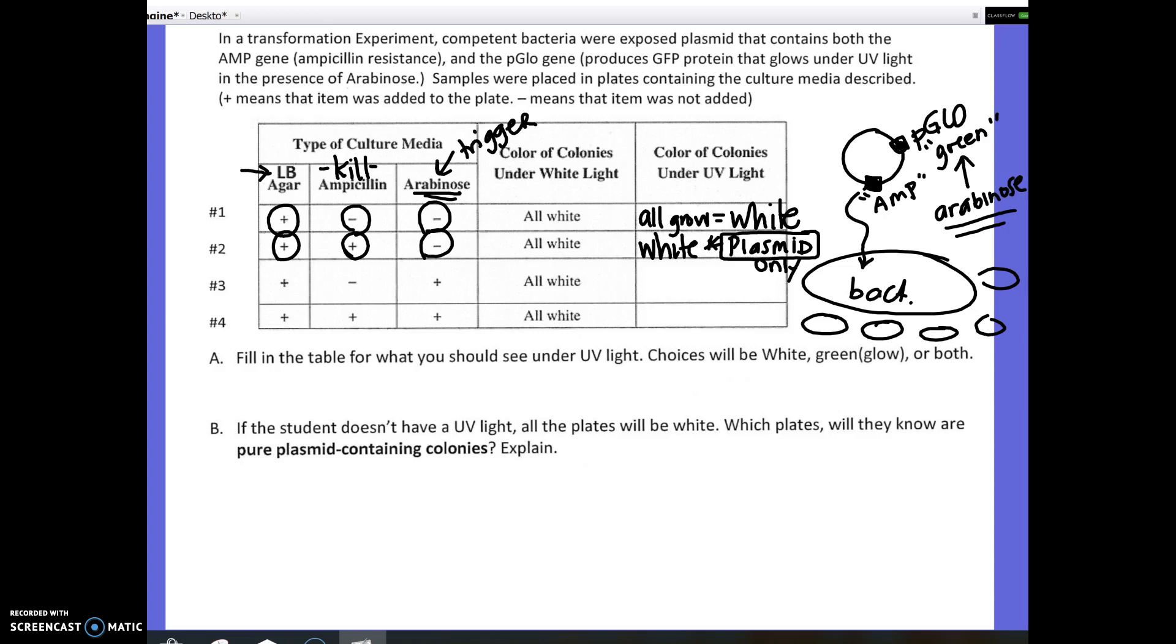Plate number three. Food. No ampicillin, and we added arabinose. Now, remember, arabinose is the trigger to make them glow. But, here's the thing. Since there's no ampicillin on the plate, and the ampicillin is what kills the one that didn't get the plasmid, on this plate, we're going to see both white and green bacteria. Why? Because the ones that did not pick up the plasmid will be white, and the ones that did pick up the plasmid will glow green under UV light. And, there's nothing to kill the ones that didn't.